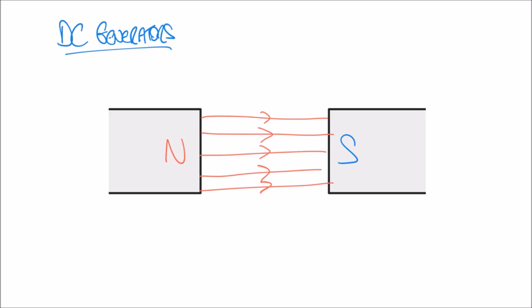Thinking back to our video on magnetic fields, we know there's going to be a magnetic field between the north and south pole. What we have to imagine is we move a conductor through this magnetic field, and as we do so, a voltage or electromotive force is going to be created in that conductor. Moving a conductor downwards through this field is going to create a current that moves towards us, and I'll mark the velocity V on that arrow.